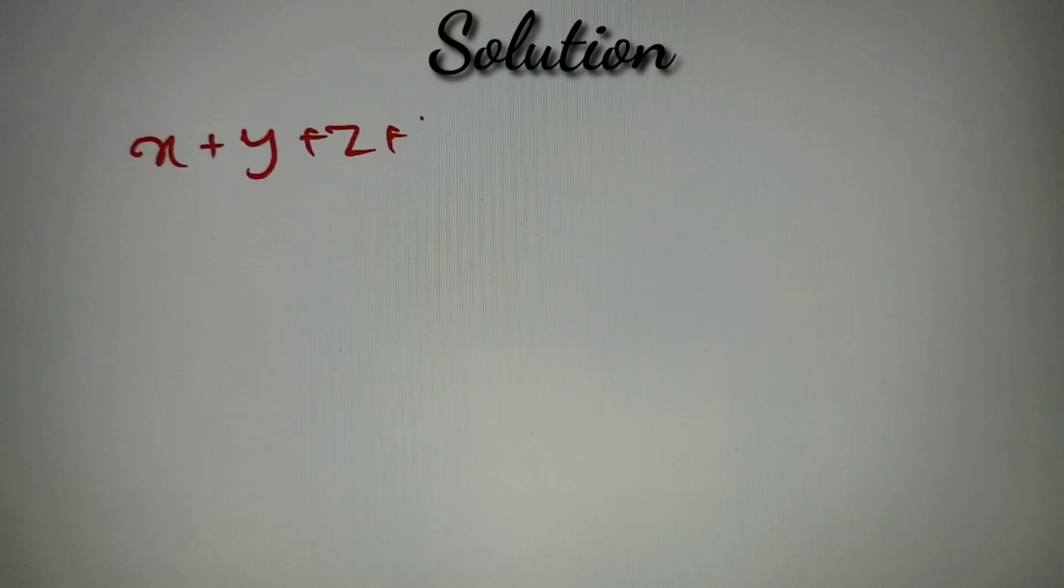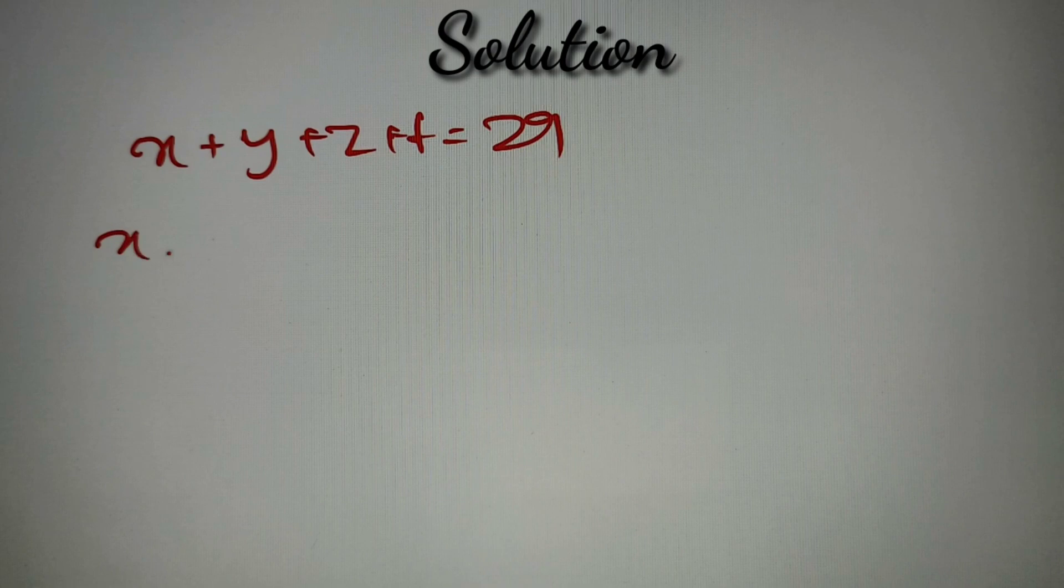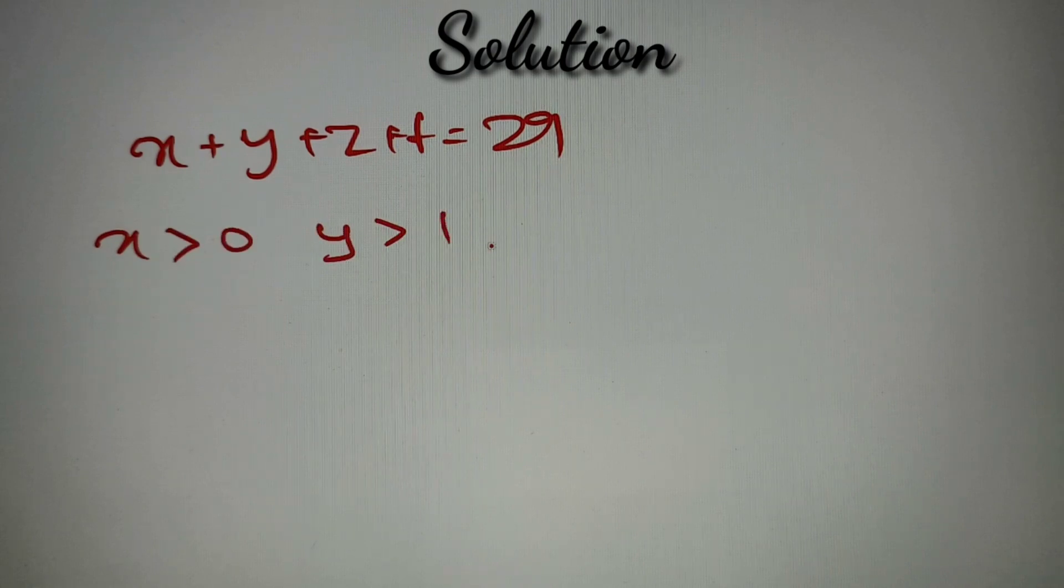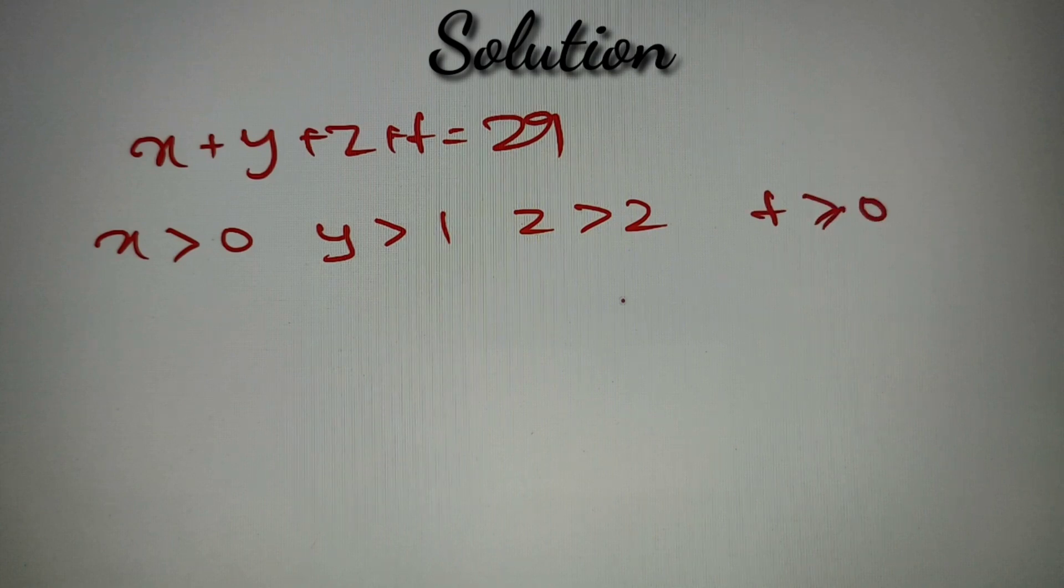So according to our given question, we are given an equation such that x plus y plus z plus t is equal to 29 and we have to find the number of integral solutions to it. Now we are given four restrictions as well such that x is greater than 0, y is greater than 1, z is greater than 2, and t is greater than or equal to 0.